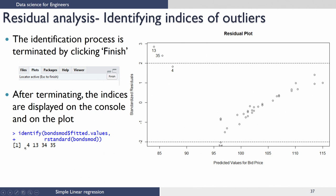On the console I have the indices displayed as 4, 13, 34, and 35. This gives you only the values, so to know where your outliers lie on the plot, I look at the plot. The 13th point of the sample is the farthest, followed by the 35th sample, then sample 4, and then the 34th sample. After identifying these outliers, we are going to start by removing one at a time and build a new model.